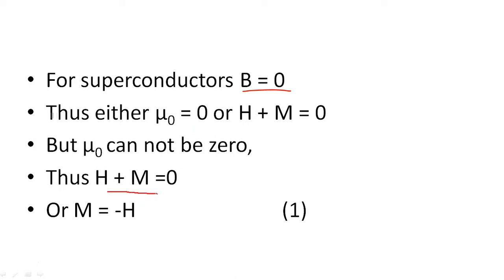Thus, H + M equals 0. By using equation A, M equals minus H. I repeat, μ₀ cannot be 0, thus H + M equals 0. Therefore, equation A becomes M equals minus H. Suppose this is equation number 1.